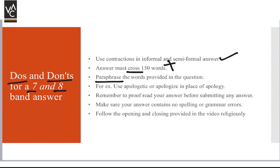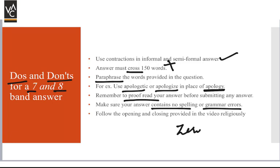For example, use 'apologetic' or 'apologize' in place of 'apology' when the question asks you to write a letter of apology. Also, always proofread your answer before submitting — go through the entire answer word by word. Make sure it contains zero spelling mistakes, because even if your answer is very well written but has errors, your score will go down.